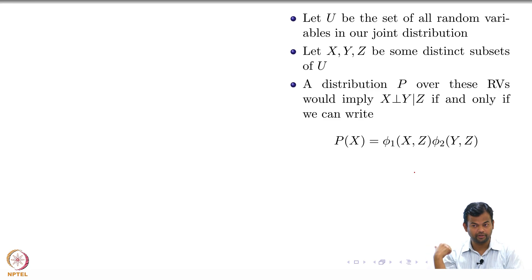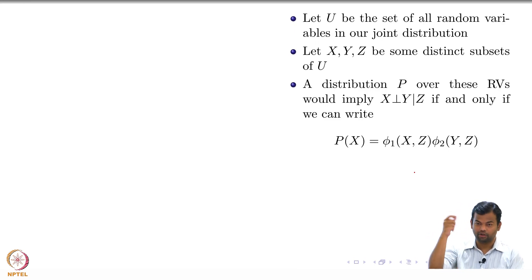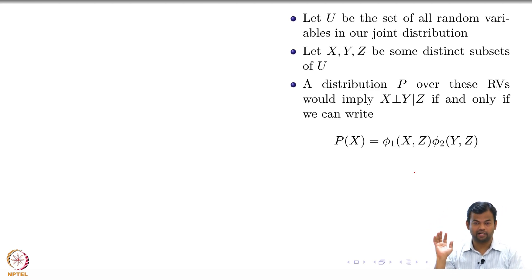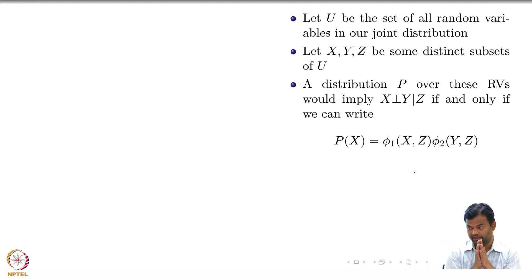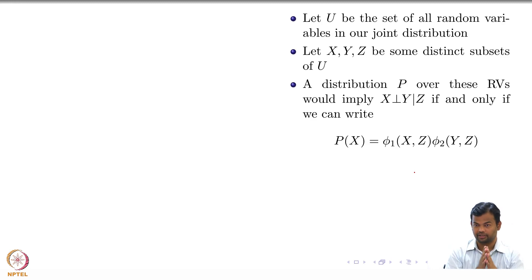What is unique about these factors? X and Y do not appear in the same factor — meaning they are not connected and not part of any clique together — while X and Z, and Y and Z, can appear in the same factor. So given Z, X is independent of Y. If the distribution can be factorized this way, it means X is independent of Y given Z. This defines the semantics of a Markov network, just as we defined the semantics of a Bayesian network.